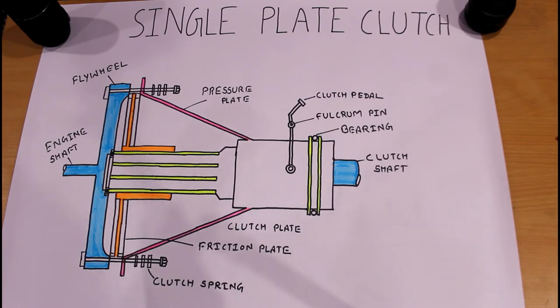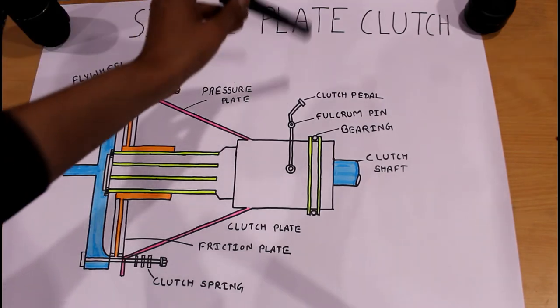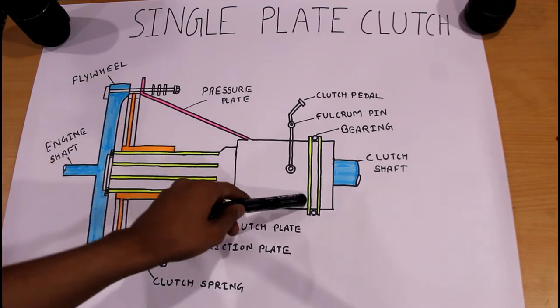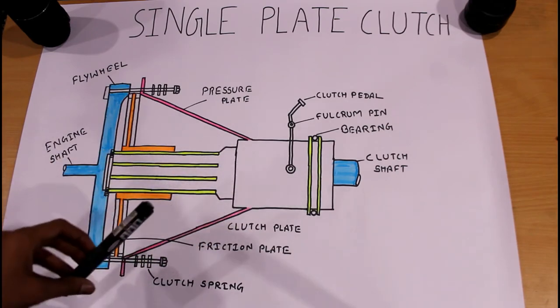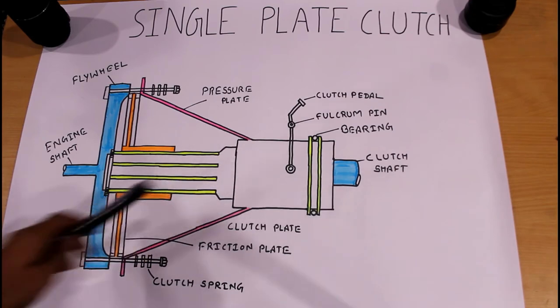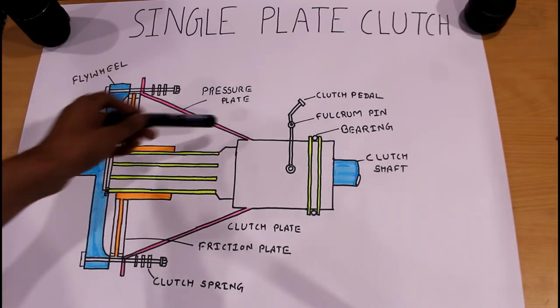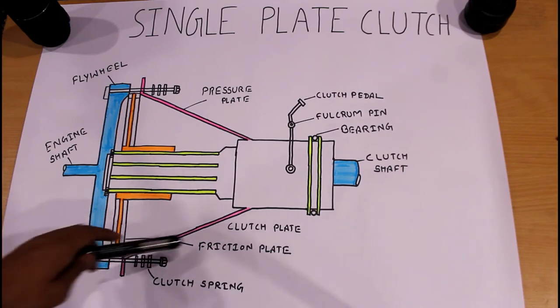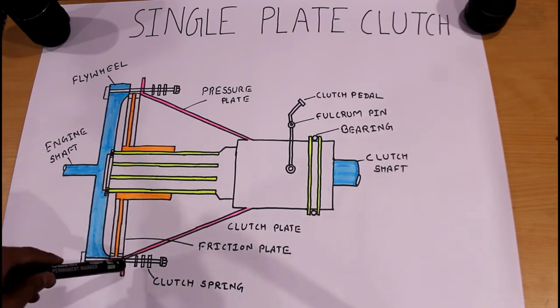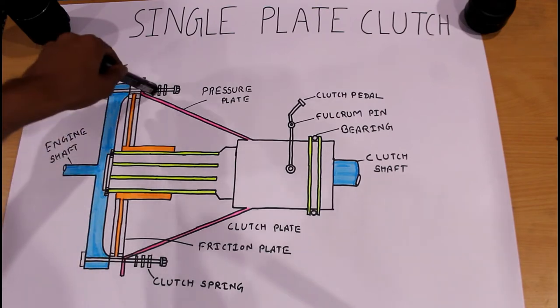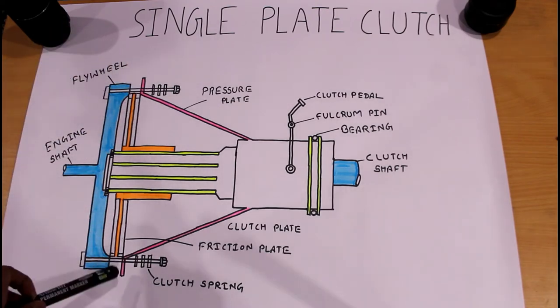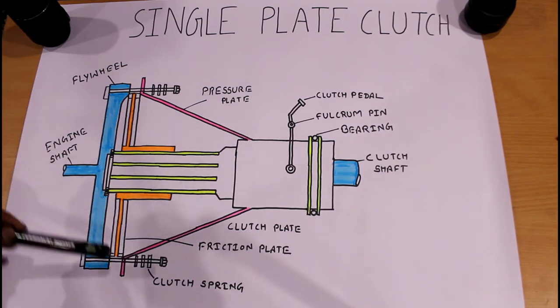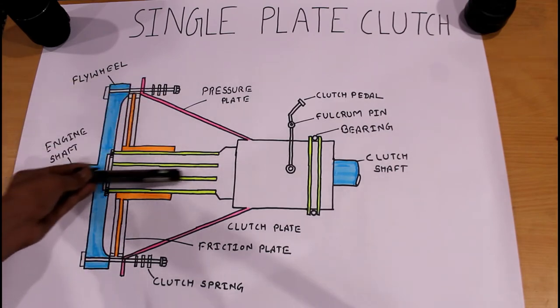When we need to change the gear, at that time we press the clutch plate, and with the help of these bearings we can pull it back. This pressure plate also goes backward, and when this goes backward it acts an opposite force to the springs. Now our clutch plate and friction plate is disengaged with the help of these splines.